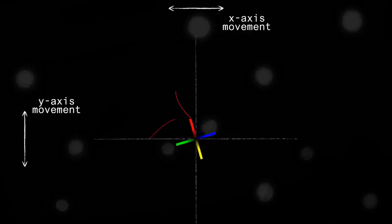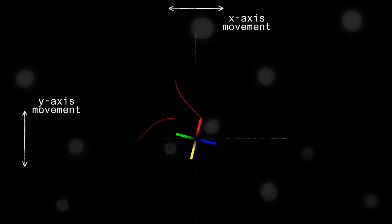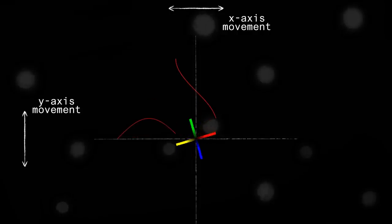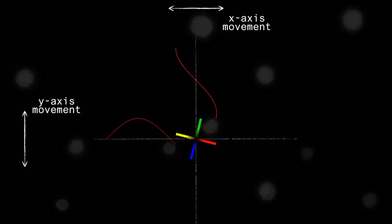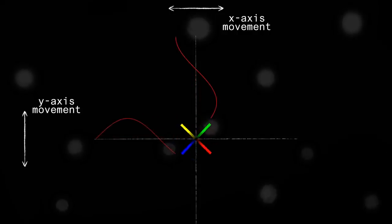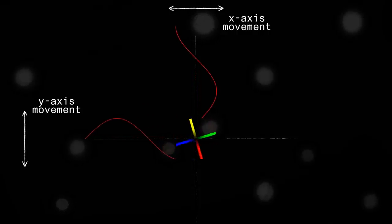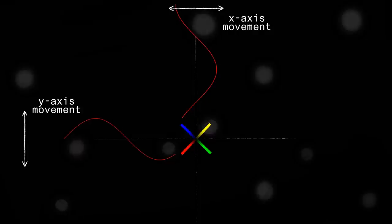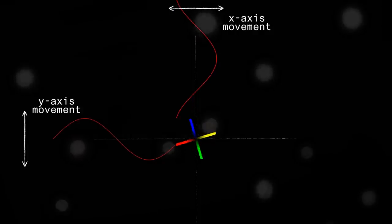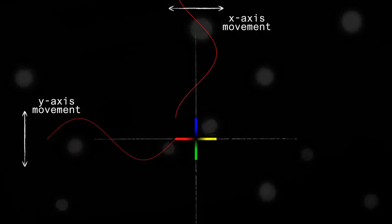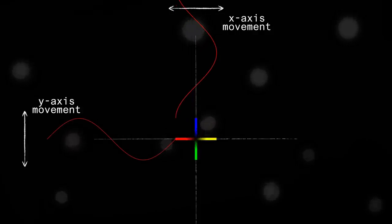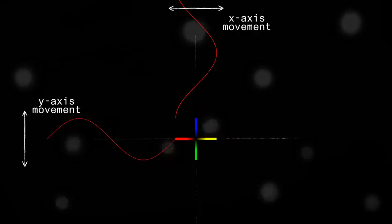We can graph two functions which represent the horizontal and vertical movement of a point of interest on the red blade by continuously plotting the x and y position as a blade rotates. The independent variable of these functions is theta, which measures the angle between the current position and the original position of the blade.